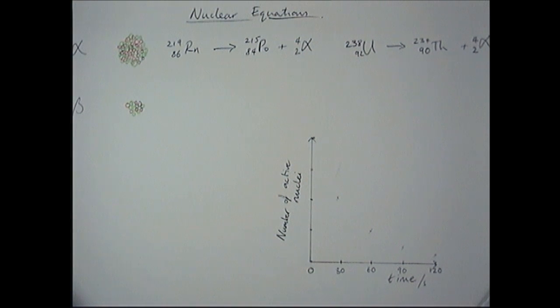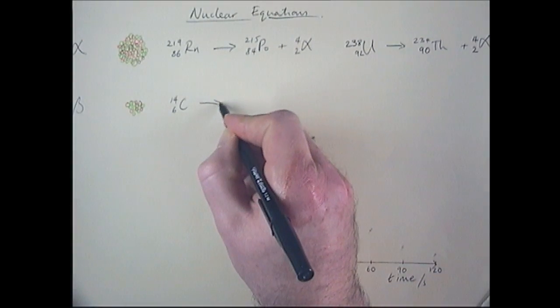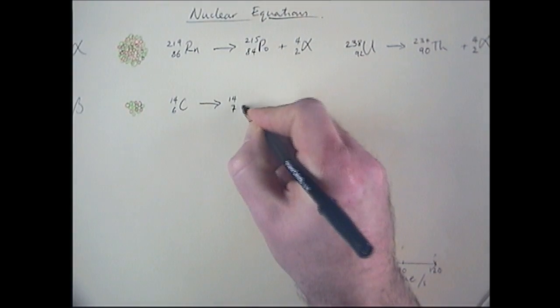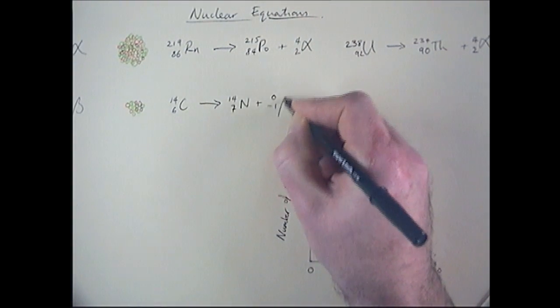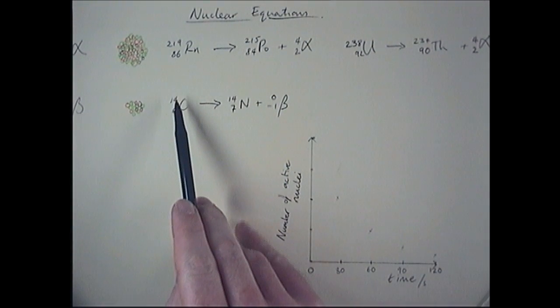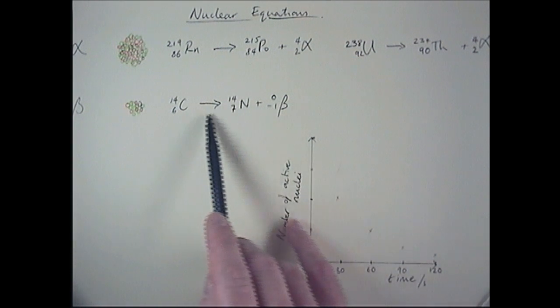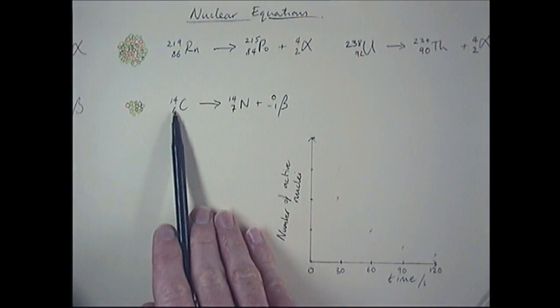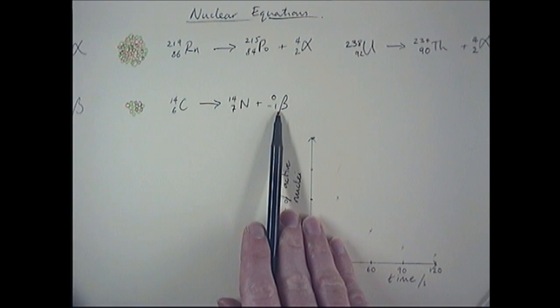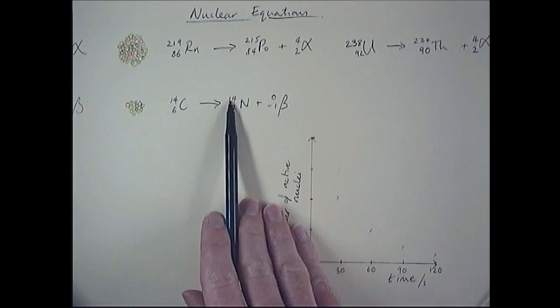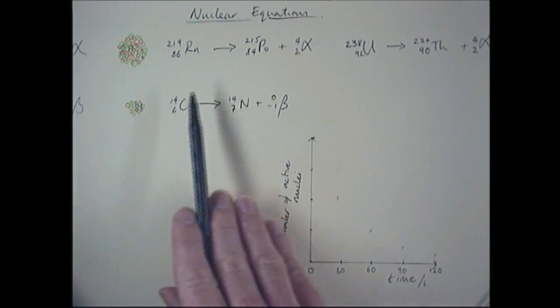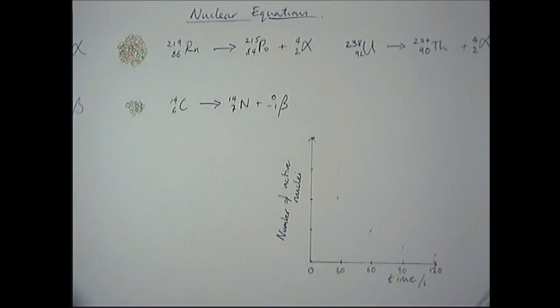So this time this is a smaller isotope here. This is carbon 14. And smaller isotopes tend to do beta radiation. So carbon 14 decays into nitrogen 14 plus a beta particle. Once more, if you look at the numbers, you can see they balance. 14 is 14 plus 0. 6 is 7 minus 1. That's the tricky one. Now, what this actually says is that actually you get one more proton in the nucleus during beta decay. But you don't get any more total protons plus neutrons. So what must have happened then is that a neutron has turned into a proton. It's absolutely fascinating how that works in nuclear decay.